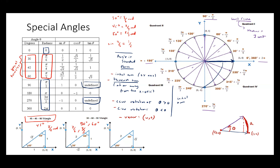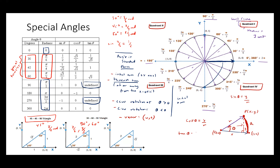Every point on the terminal arm can be expressed as (x, y). Because y and x are 90 degrees apart, you can apply trig ratios. If this forms a right triangle with radius r, then sine theta is y/r, cosine theta is x/r, and tan theta is y/x. This is in quadrant 1, quadrant 2, quadrant 3, and quadrant 4 of the Cartesian plane.